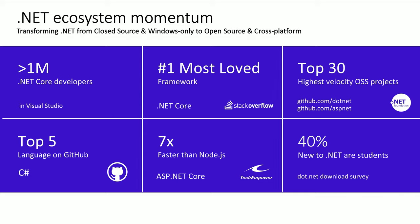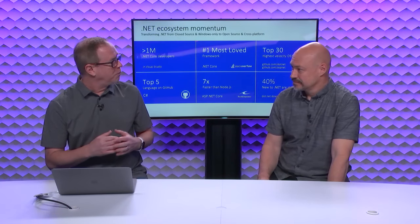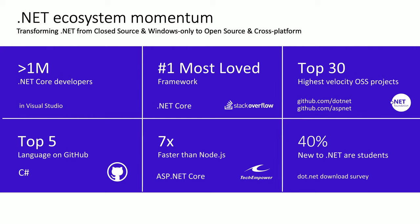The last couple of years as we released .NET Core — that's the re-envisioning of .NET about being super fast, super small, cross-platform, and totally open source — we've had some pretty good numbers. In the last two or three years, we've got over a million .NET Core developers. Stack Overflow had a survey showing .NET Core as the number one most loved framework. We're also one of the highest velocity open source projects on GitHub. C# is the number five language on GitHub. And as we started caring about performance, we've got .NET way up in the TechEmpower benchmarks — we're seven times faster than Node.js.